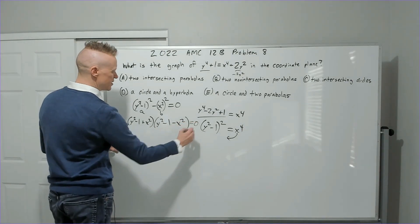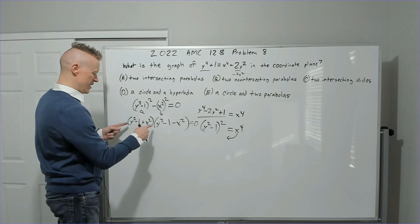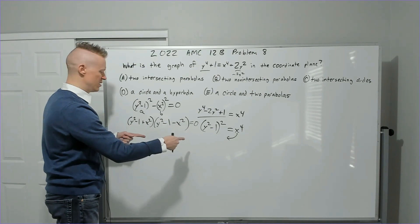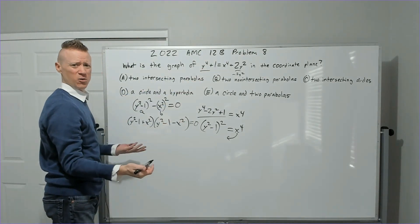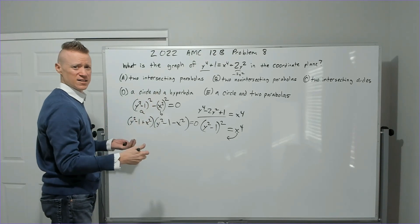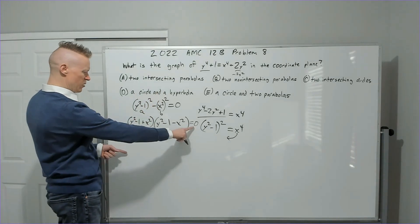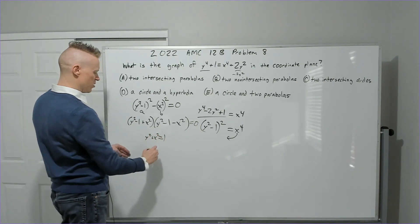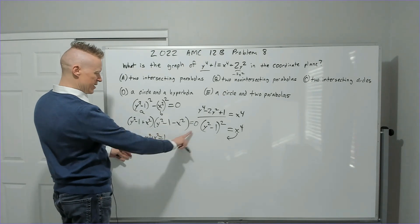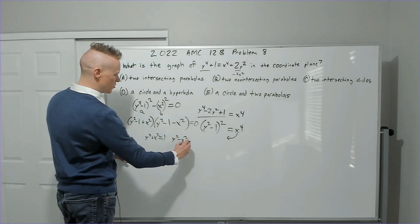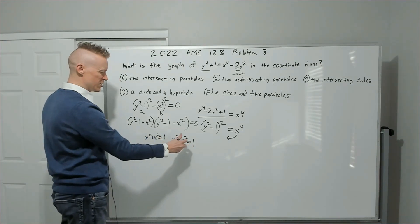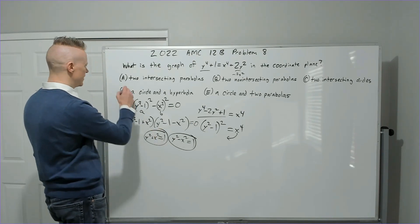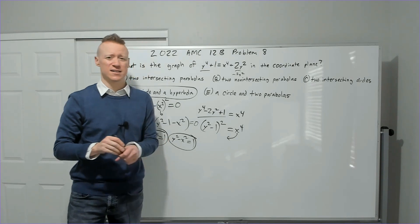Setting each factor to zero: from y² + x² − 1 = 0 we get x² + y² = 1, which is a circle. From y² − x² − 1 = 0 we get y² − x² = 1, which is a hyperbola. Together these give answer choice D.